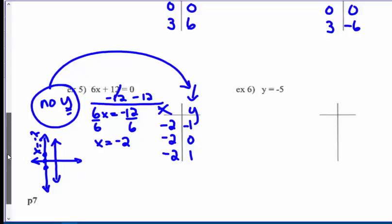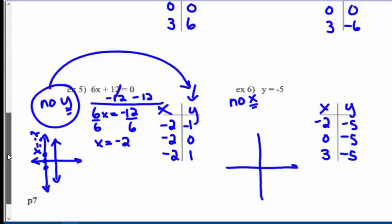Number 6, now there's no x. Okay, well, y, no choice here. Y is always negative 5. And x, I'm going to choose three values. Okay, negative 2, 0, and positive 3, let's say. So that's the linear equation that graphs as a horizontal line, y equals negative 5. So that would look like this.